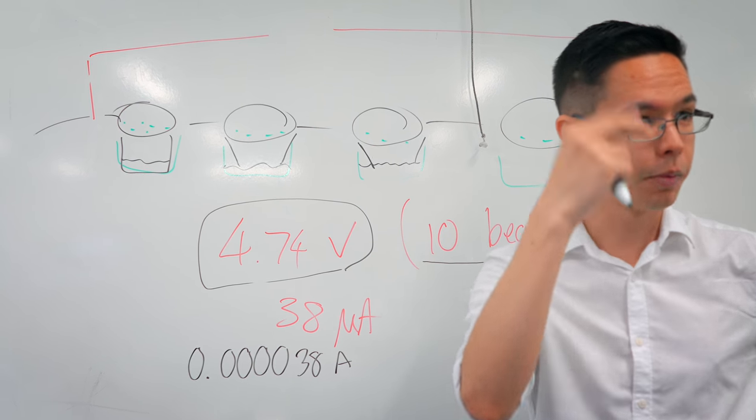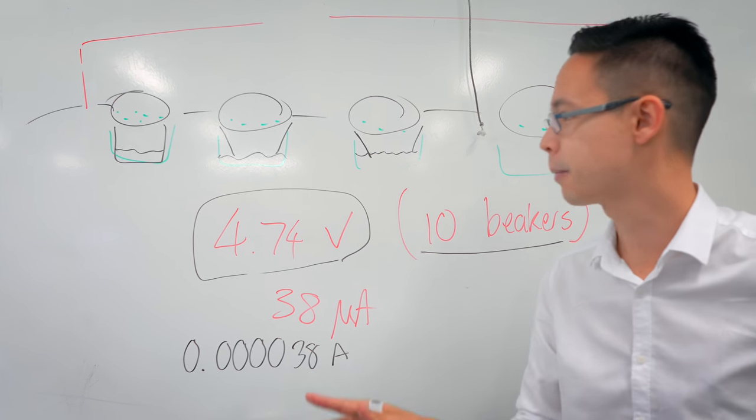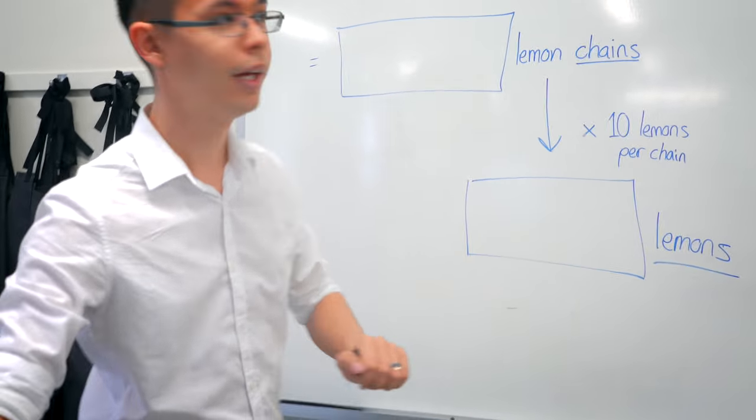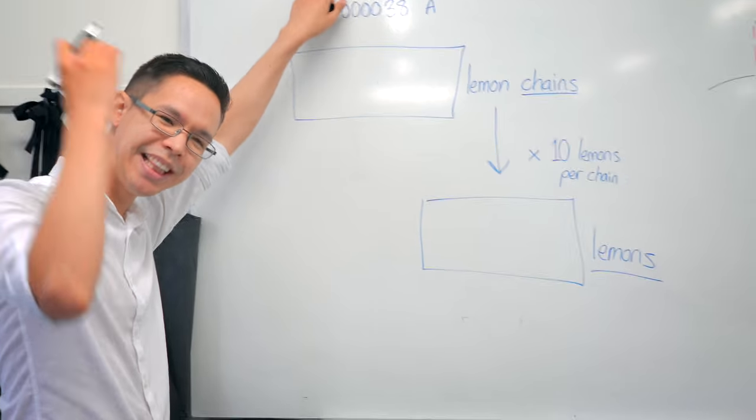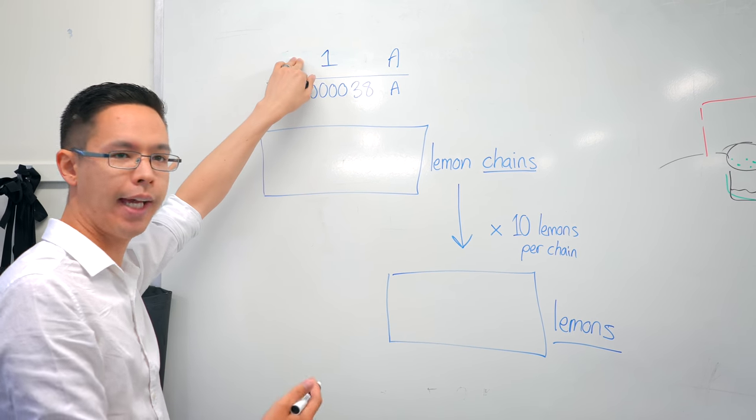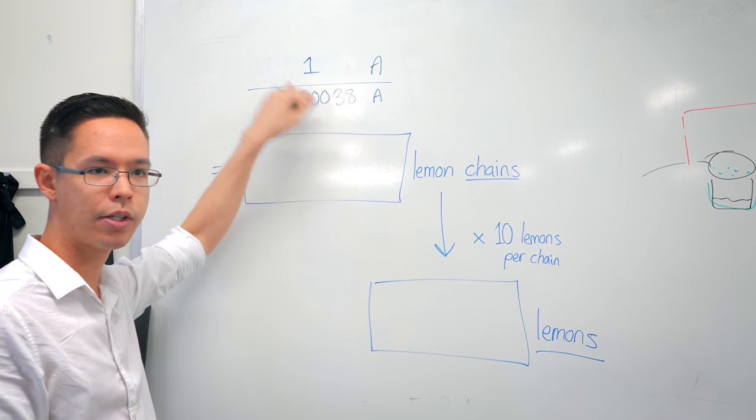Now the question is, how many lemons would it take? If we had infinite lemons to work with in infinite time, how many would it take? Let's go over to the board here. If my target is at least one amp to charge my iPhone, and each chain is only giving me this much, how many multiples of this chain am I going to need? So I did a quick division.